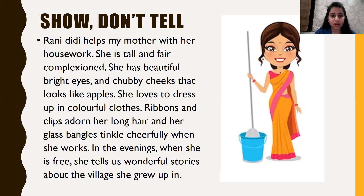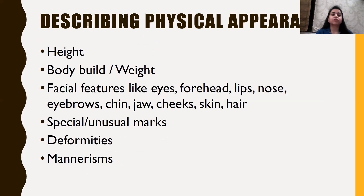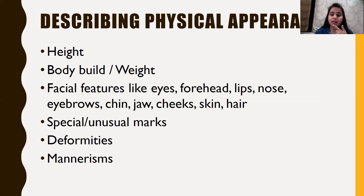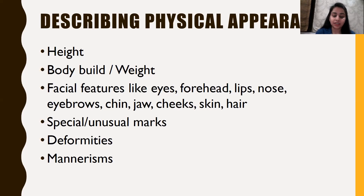Whenever we are describing something, the first thing is to start by describing the physical appearance of a person. Physical appearance includes height, body build, weight, and facial features like eyes, forehead, lips, nose, eyebrows, chin, jaw, cheeks, skin and hair. It also includes special and unusual marks on your body, deformities if any, and mannerism — meaning the behavior and habits of a person. Whenever we are describing a person, we describe them by talking about all these things.